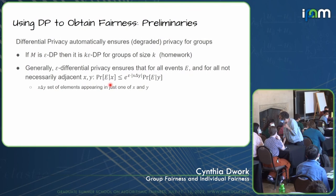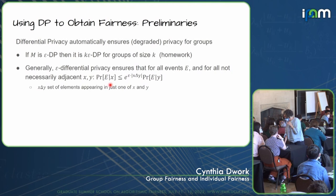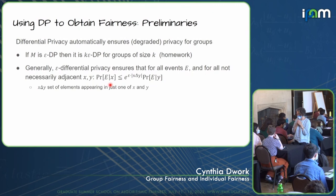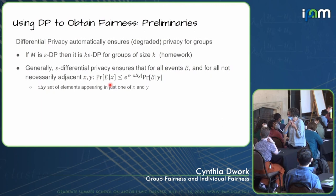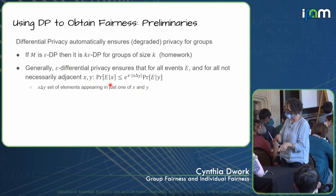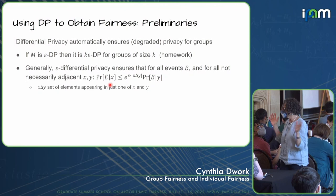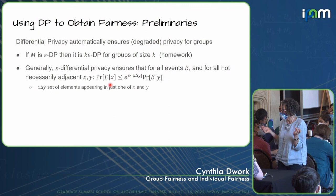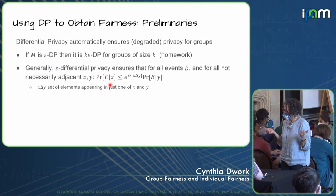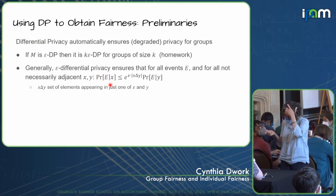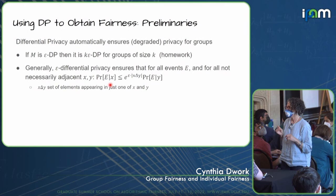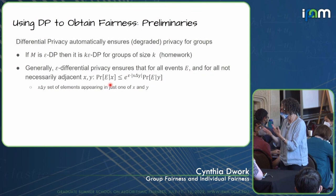A student asks: can DP be connected to group fairness and statistical parity, since statistical parity says the prediction distribution should be independent of your sensitive attribute? The instructor clarifies: this is not talking about statistical parity at all — we've given up on that. We're looking only at individual fairness, which says similar people should be treated similarly. Statistical parity might actually require you to behave quite differently even for similar people if the two groups don't look alike. However, tomorrow we'll talk about metric fairness or affirmative action, where something related will come up.